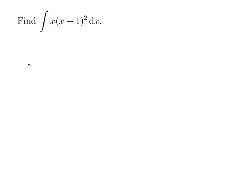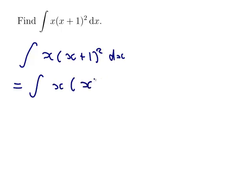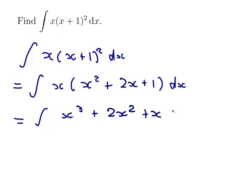So I reckon I'll just expand the brackets. The integral of x times x plus 1 squared dx would be the integral of x times x squared plus 2 times x times 1 plus 1 squared. And then if we expand that out, x cubed plus 2x squared plus x, and now we can just do it.